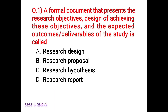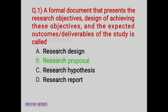The first question: a formal document that presents the research objectives, design of achieving these objectives, and the expected outcomes and deliverables of the study is called — Option A: research design, Option B: research proposal, Option C: research hypothesis, Option D: research report. The correct answer is Option B, research proposal.